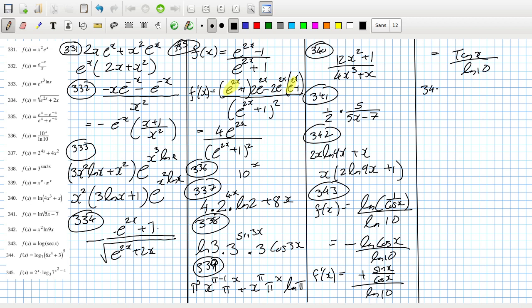344. That would be 5 times 24x cubed over 6x^4 plus 3, over natural log 7.